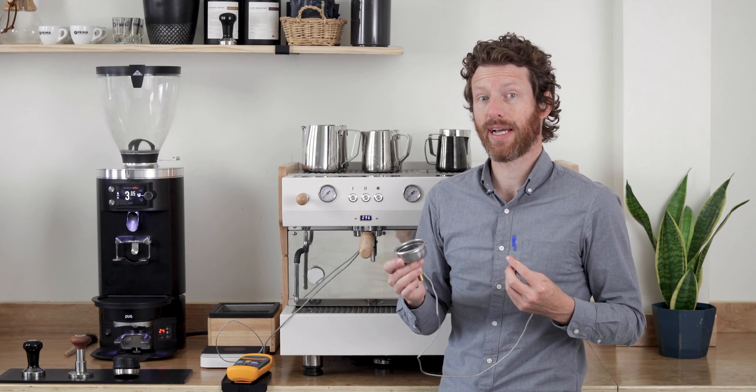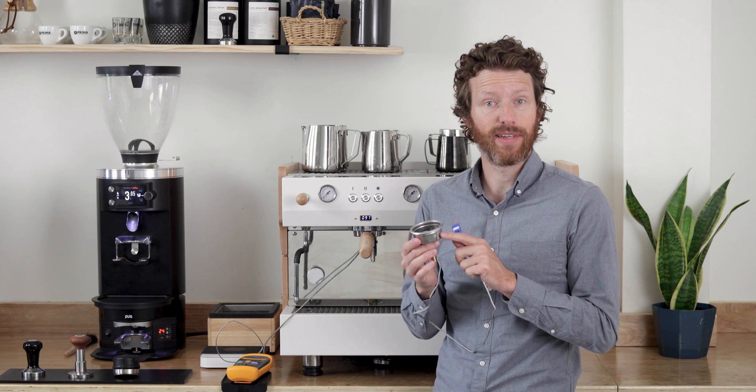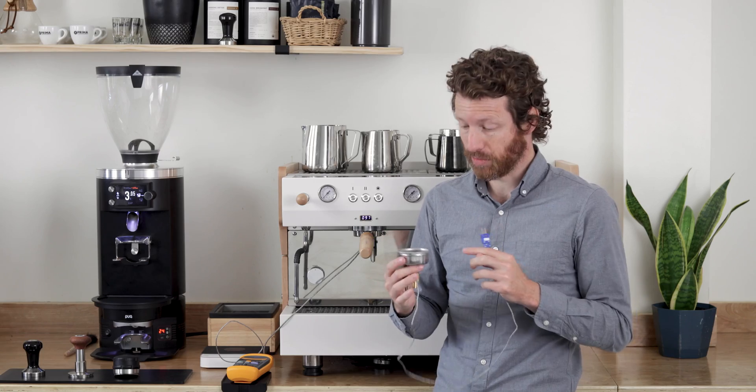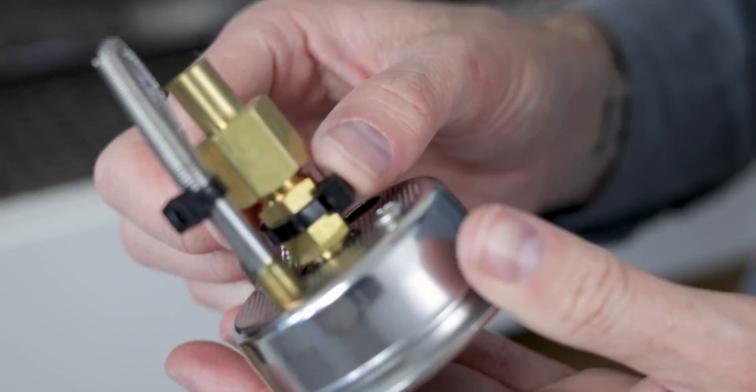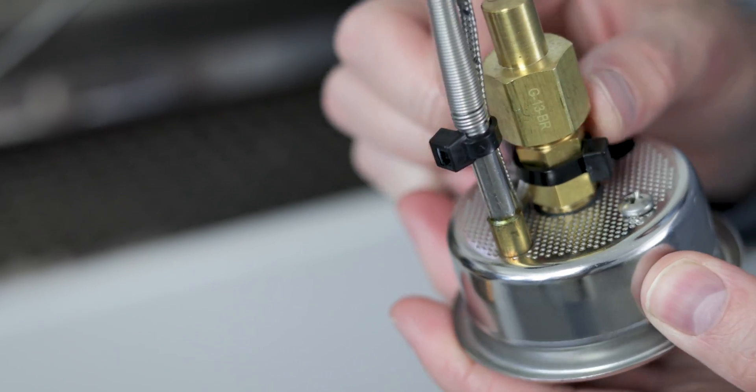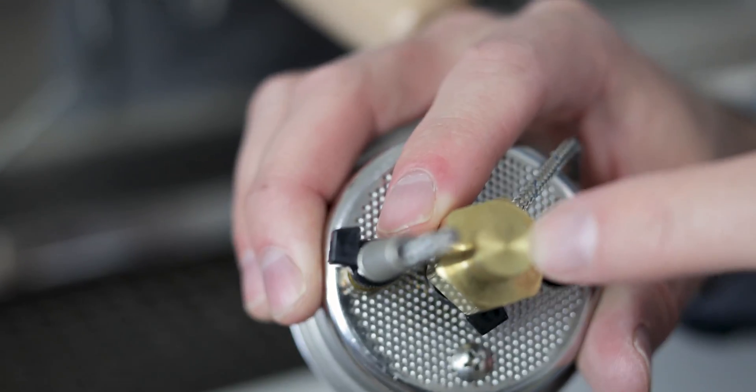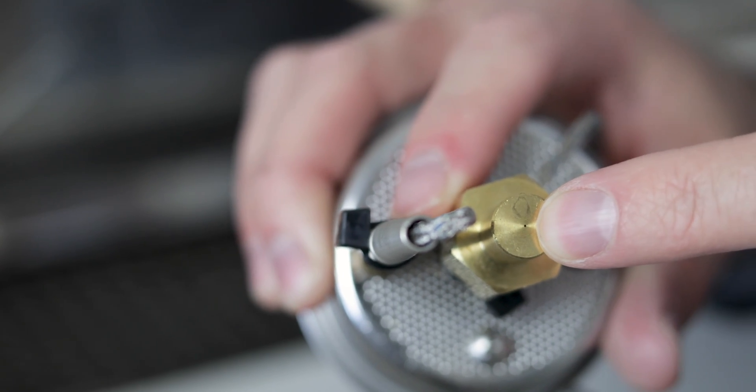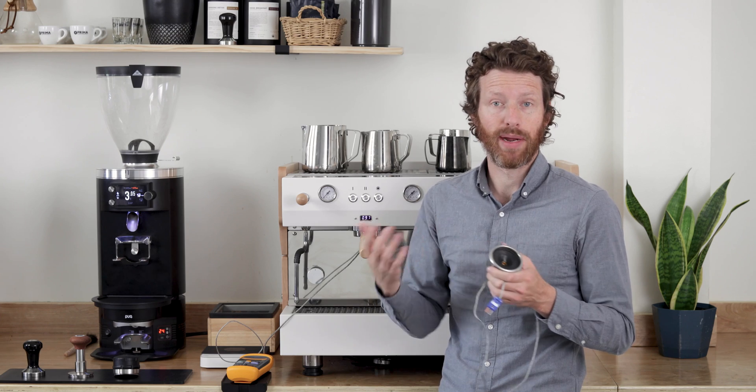It looks like a really rudimentary device, but it does very complicated work. You have that 58 millimeter basket that'll fit in most commercial machines, your temperature probe right here, your flow controller that controls the amount of water that's going to be released, because you need a certain amount of water in here to measure the stable temperature. And this little plastic insert that is mimicking a well-prepared puck.